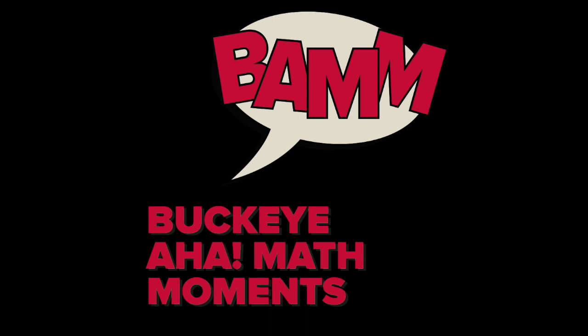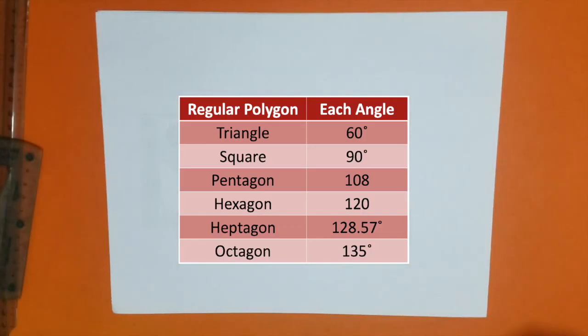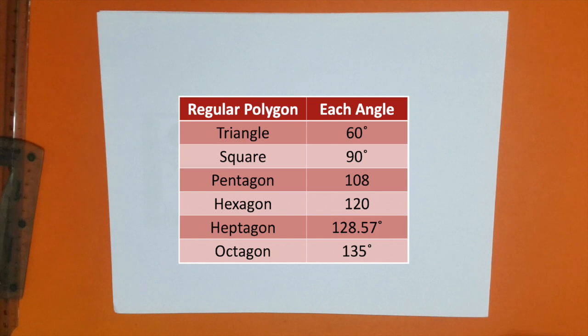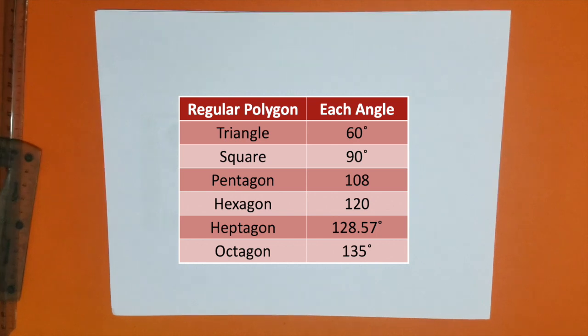This might make more sense after you've seen the first Monday video. But for now, we will use this table which tells us what is the measure of the angles of every regular polygon. Remember that a regular polygon has all the sides of the same length and all angles of the same measure. So we want to trace a shape that does just that.